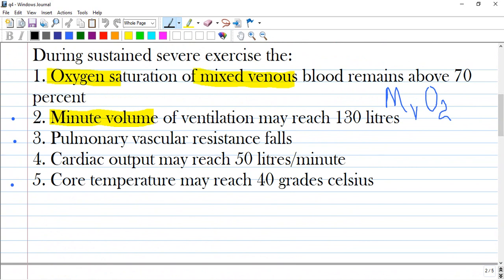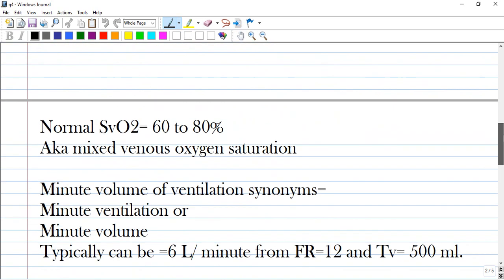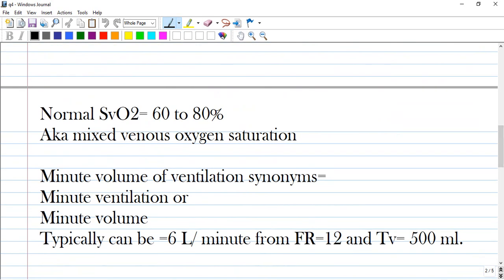Option 2: minute volume of ventilation may reach 130 liters. Minute volume of ventilation, also known as minute ventilation or minute volume, are synonyms and you should know that every combination of these words means the same. Minute volume typically can be 6 liters per minute.